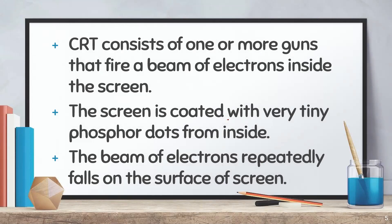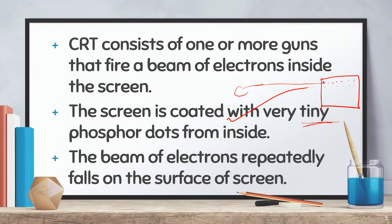The screen is coated with very tiny phosphor dots on the inside. If you look at a TV screen or CRT monitor screen, the phosphor dots are very small. The electron beam is generated by the CRT tube using an electron gun. Wherever the electron beam touches the phosphor dots, the phosphor dots generate light, and we can see light on the screen.